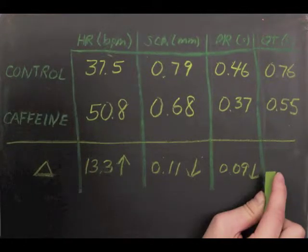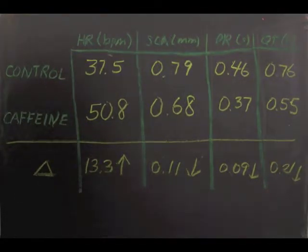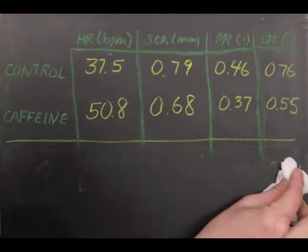Caffeine also resulted in a decrease in the PR segment, or an increase in bundle of His conduction, and a decrease in the QT segment, or Purkinje fiber conduction.